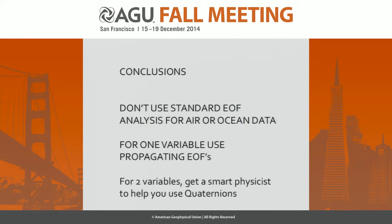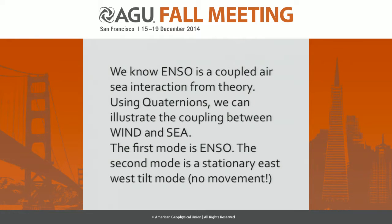This is only one ENSO event in the period from 1980 to 2010. My conclusions are: don't use standard EOF analysis for air and ocean data. For one variable, you can use propagating EOFs or complex EOFs. For two variables, get a smart physicist to help you use quaternions — because I've asked a lot of you and you've never heard of them. Using quaternions, we can illustrate the coupling between wind and sea. The first mode is ENSO, and the second mode is a stationary east-west tilt mode.